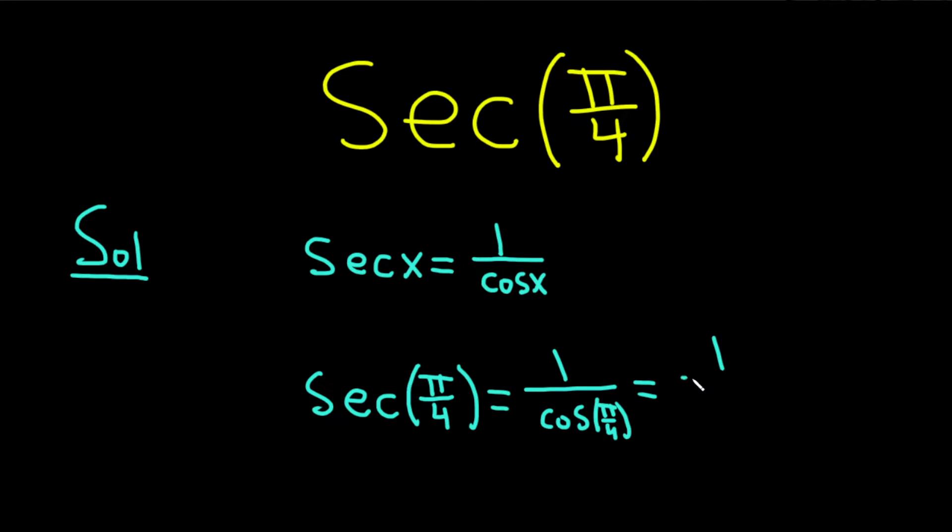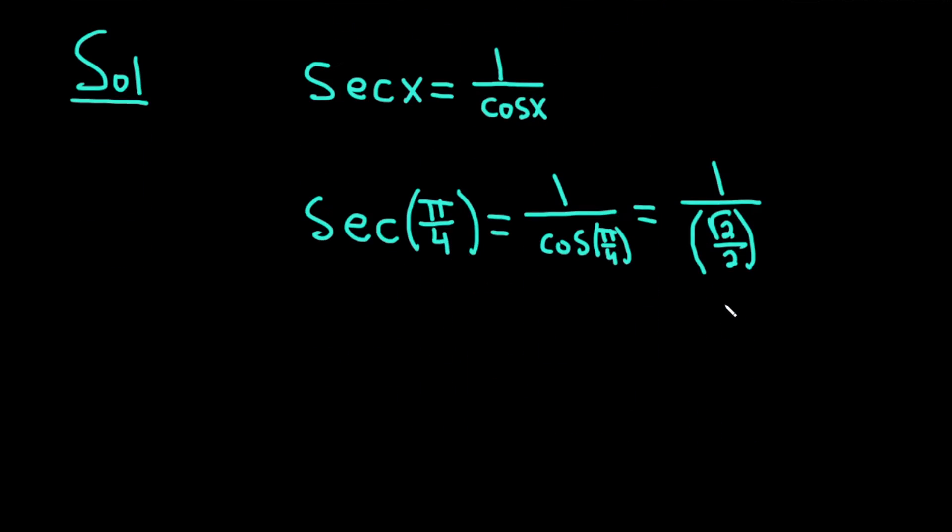This is equal to 1 over the cosine of pi over 4 is the square root of 2 over 2, and it's in parentheses. So we have 1 divided by the square root of 2 over 2.